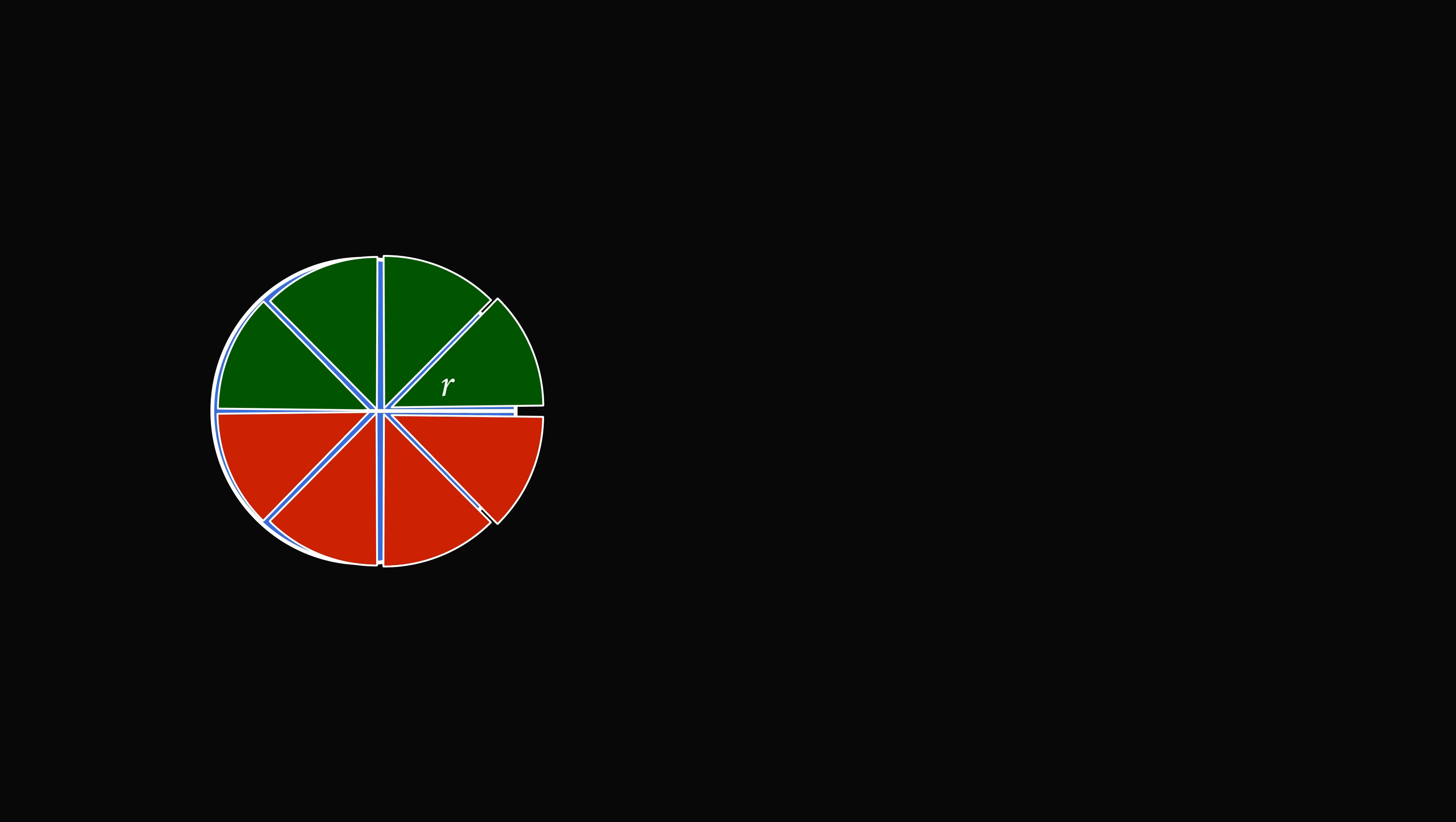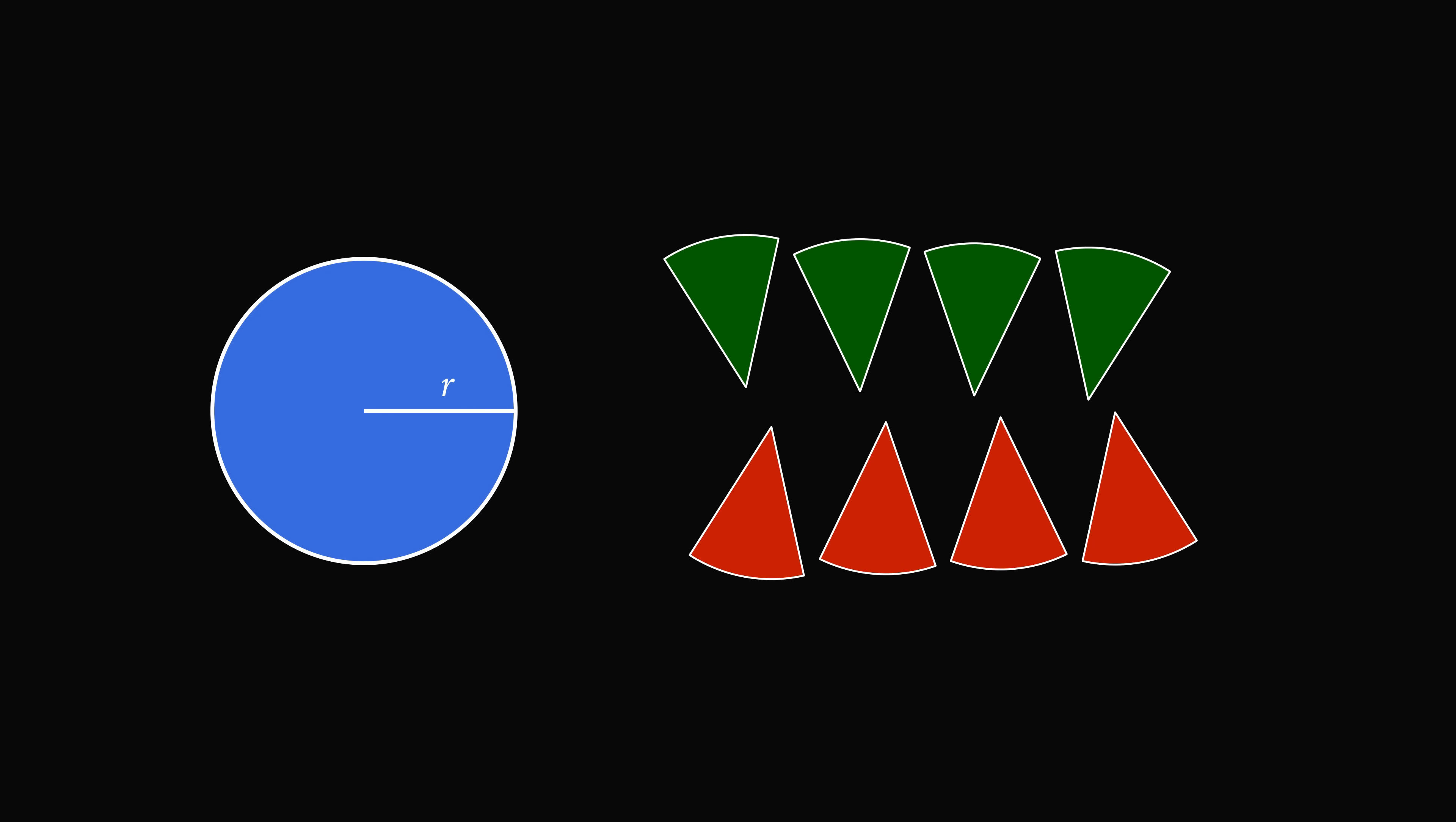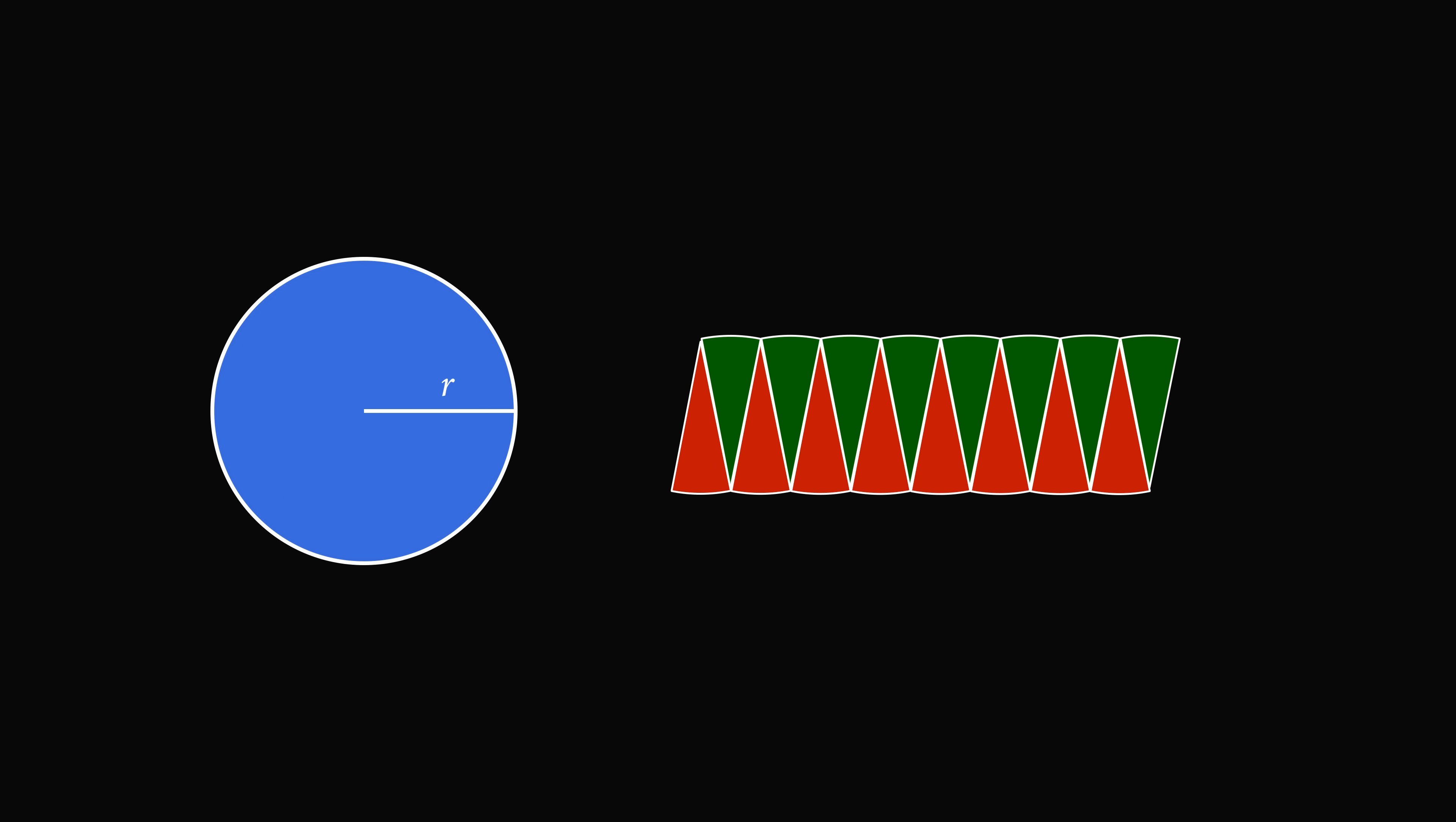Now let's rearrange half of the slices, and interweave them with the other half of slices. We end up with a shape that looks like a parallelogram. Now what would happen if we increase the number of slices? If we interweave the slices, we end up with a shape that resembles a parallelogram even further.